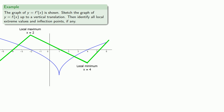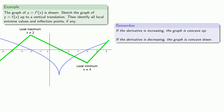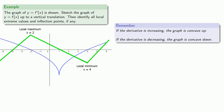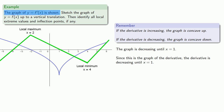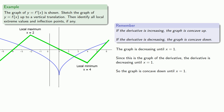Now let's talk about concavity. Remember, if the derivative is increasing, the graph is concave up, and if the derivative is decreasing, the graph is concave down. We see that the graph of f prime is decreasing until x equals 1. Since this is the graph of the derivative, that says the derivative is decreasing until x equals 1, which means the graph of f is concave down until x equals 1. Let's put in a marker and draw a concave down graph that roughly follows the skeleton until we hit the dotted line.